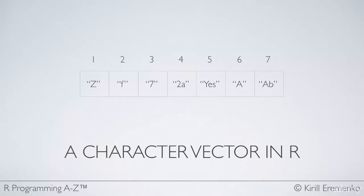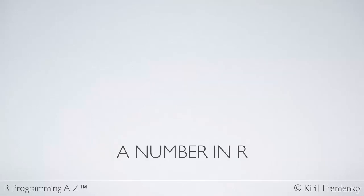And one final thing I wanted to show you — a little secret of R. Let's say you have a number, for instance 27. We've talked about variables and values and how you can store values in variables, and in fact the secret of R is that even a single number is stored as a vector — a vector of length 1. That is R's little secret. We'll get back to it further down in the course, but just keep in mind that everything in R, even a single number or a single character, is always going to be a vector. That's just how this programming language works.